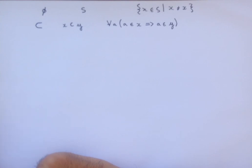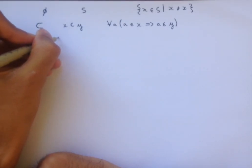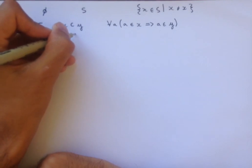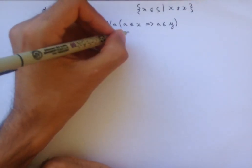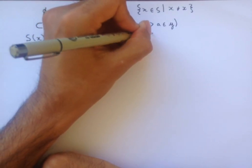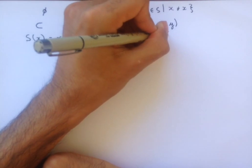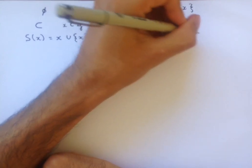And finally, the last thing that we're going to define, which is something that's going to be very useful for us, is a function S of X, which, given a set X, returns X unioned with the set containing X. Some examples of what this function does: S of the empty set is equal to the empty set unioned with the set containing the empty set, which is equal to the set containing the empty set.